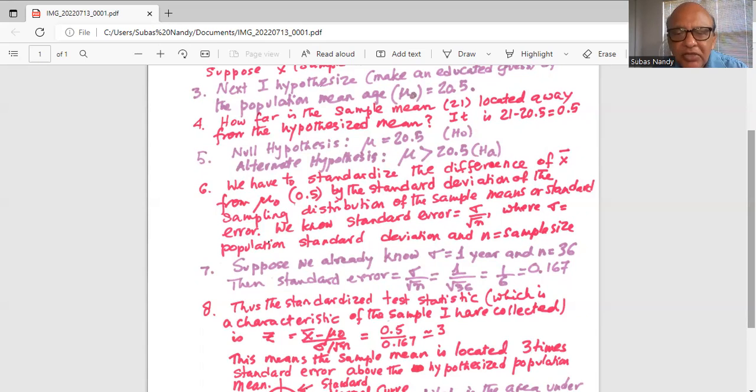What does it mean? It means a sample mean of 21 is located away from the hypothesized population mean of 20.5 by 3 times the standard error.